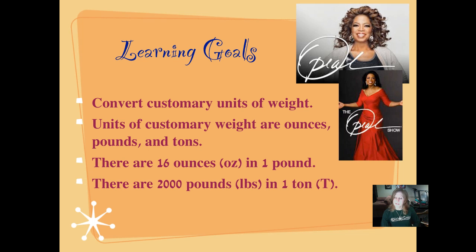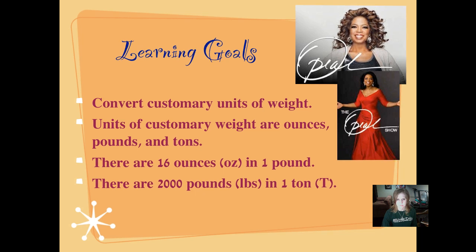There are 16 ounces in one pound — you need to memorize that. And you need to memorize that there are 2,000 pounds in one ton. I've also listed the abbreviations. The ounces that we're using tonight have to do with weight; they are not liquid, they are solid. So we're not talking about fluid ounces — we're talking about solid ounces, or the weight of ounces.